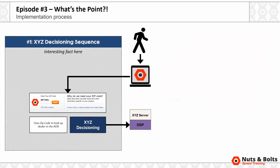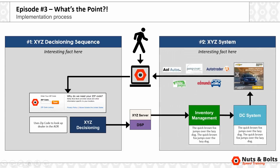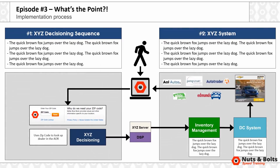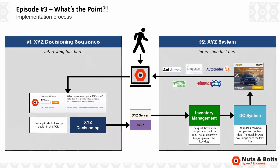We have the XY decisioning sequence, and notice I'm boiling all of that text down to one interesting fact about the sequence. We also have the XYZ system, again with one specific interesting fact. Now, if you weren't presenting this live — if this was part of a pitch or proposal — you have room to add all of that text back. But if you're presenting live, that's the information you'd want to have memorized or bring up as people are looking at your diagram.